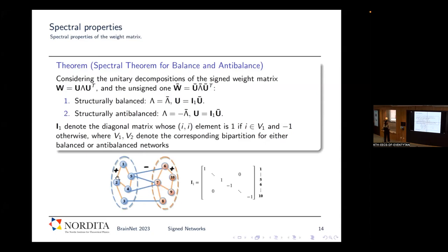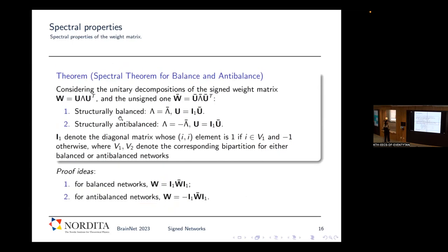The I1 matrix is a diagonal matrix with positive one if nodes belong to one node subset and minus one if belonging to the other, corresponding to the balanced bipartition with positive edges inside and negative edges outside. For the structural anti-balanced case, the eigenvalues are the opposite of the unsigned case, and the eigenvectors are the same apart from the extra signed pattern in the I1 matrix, now corresponding to the anti-balanced structure with negative edges inside and positive edges between the two subsets.